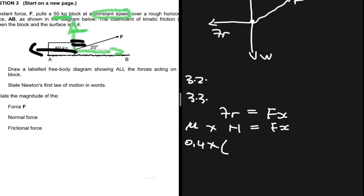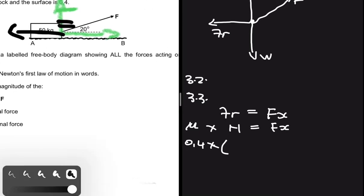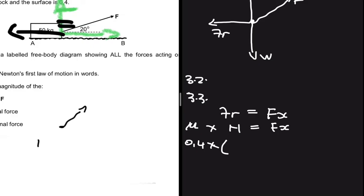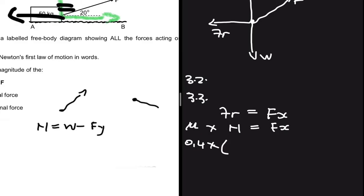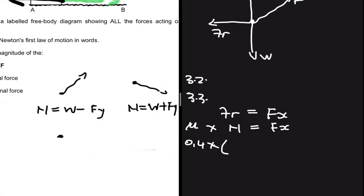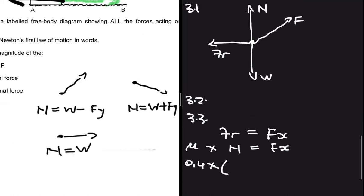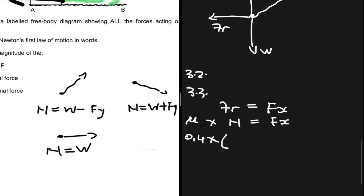Let me show you something. If you have a force pointing up, the normal force equals the weight minus the y-component of that force. If the force points down, the normal force equals the weight plus the y-component. If the force is purely horizontal, the normal force equals the weight. Here our force is pointing up, so the normal force equals weight minus the y-component of the applied force.